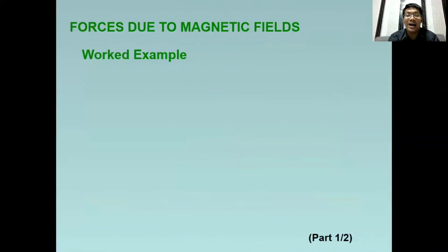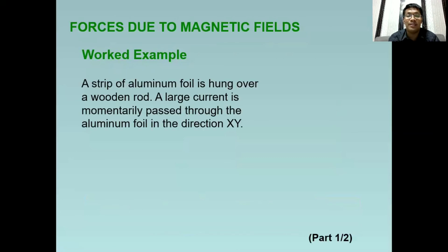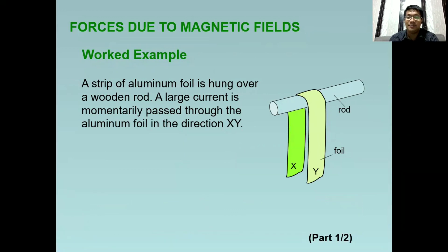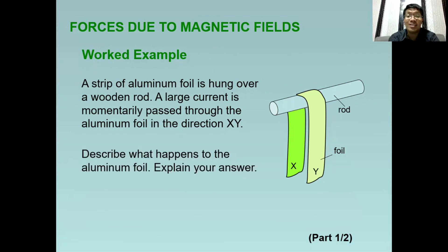Para maunawaan natin, let's answer this example. A strip of aluminum foil is hung over a wooden rod. A large current is momentarily passed through the aluminum foil in the direction XY. So ganito natin siya titignan. Pag dumaloy na yung kuryente dito sa direction na ito, XY, ano kaya ang mangyayari sa ating aluminum foil? To discuss the answer, let us proceed to the next slide.